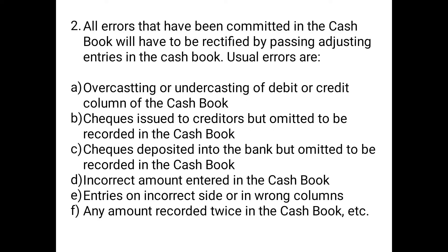Point two: all errors committed in the cash book will have to be rectified by passing adjusting entries in the cash book itself. The usual errors are overcasting or undercasting of the debit or credit column — meaning more or less amount has been shown in a column by mistake. Overcasting means showing more amount and undercasting means showing less amount.